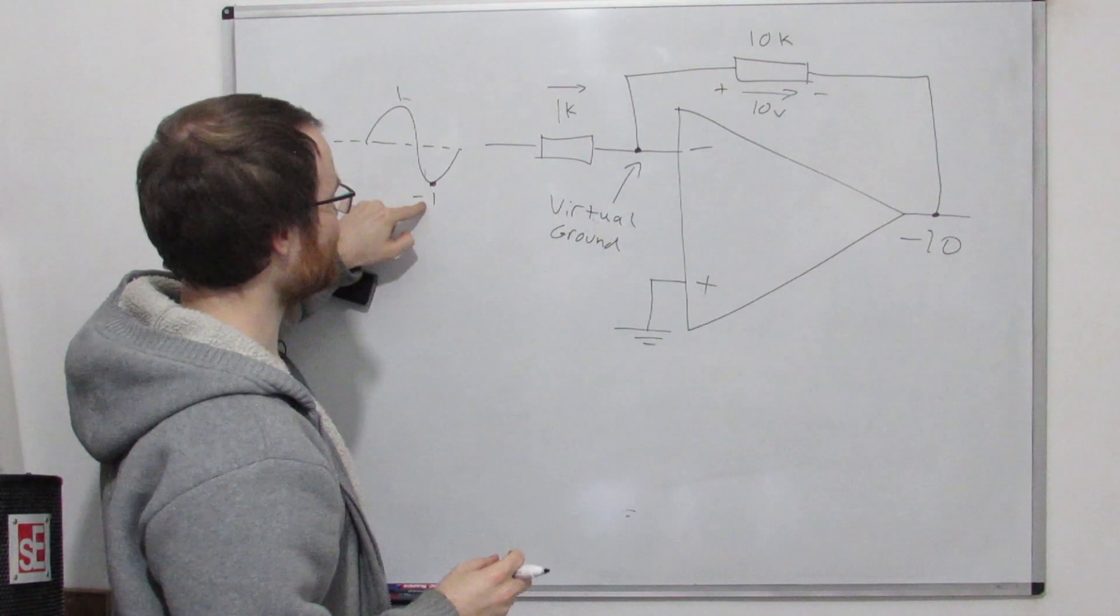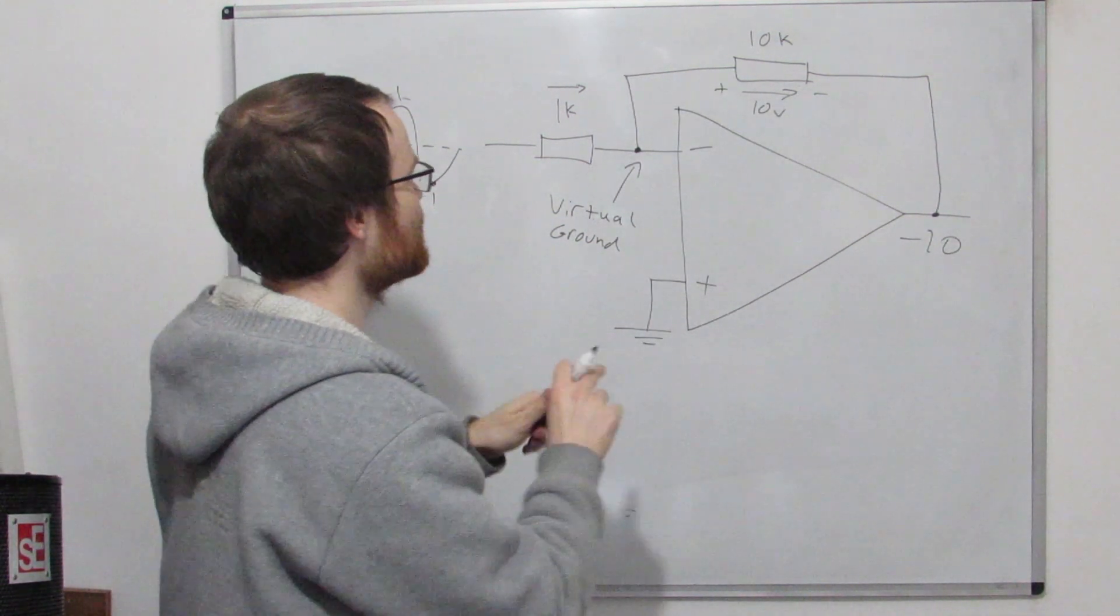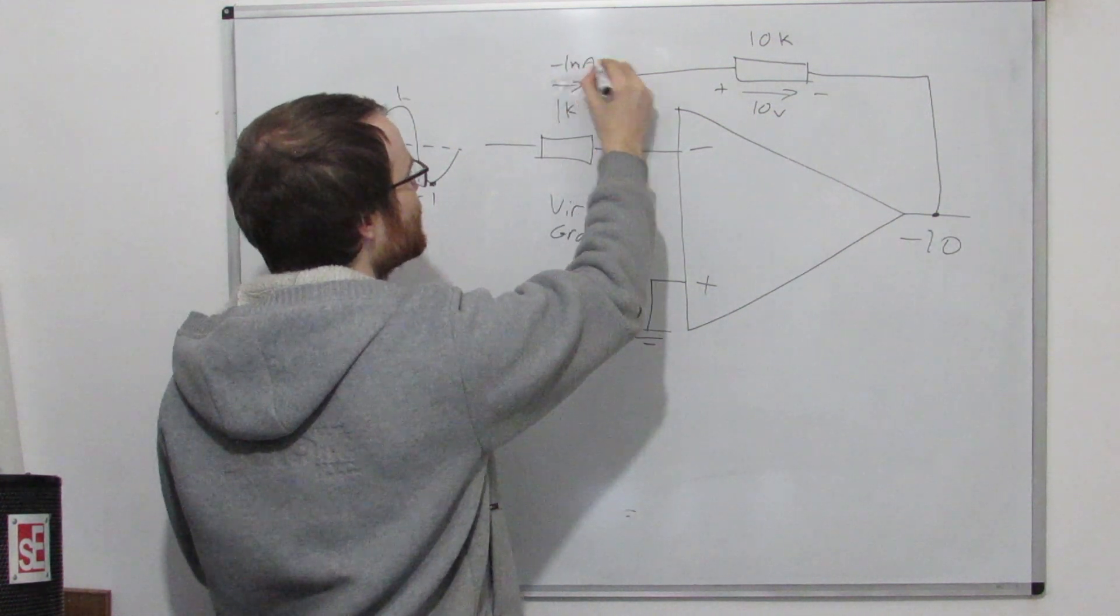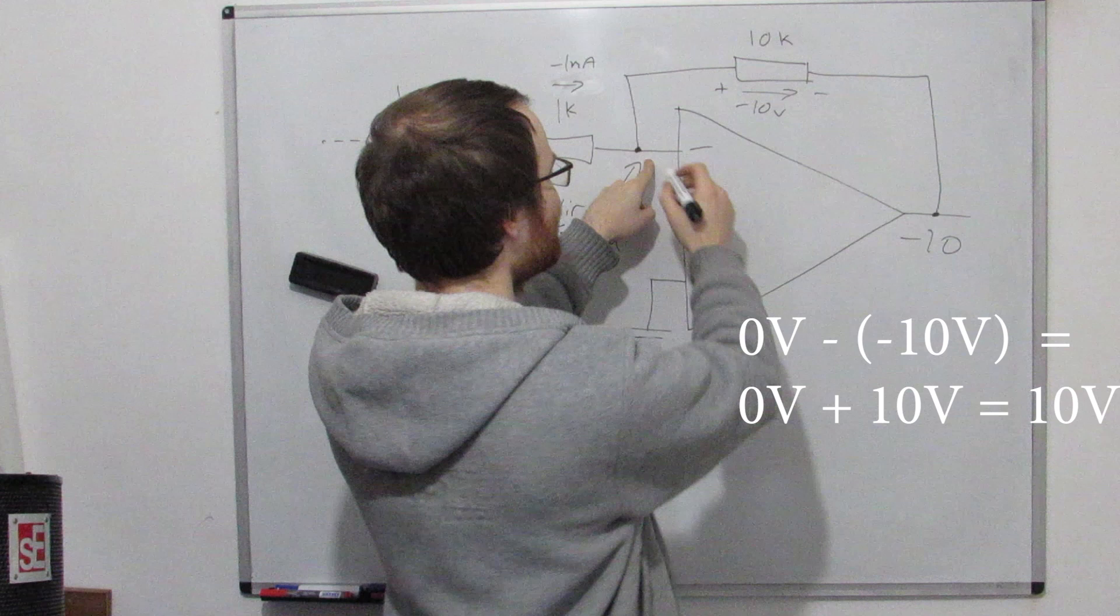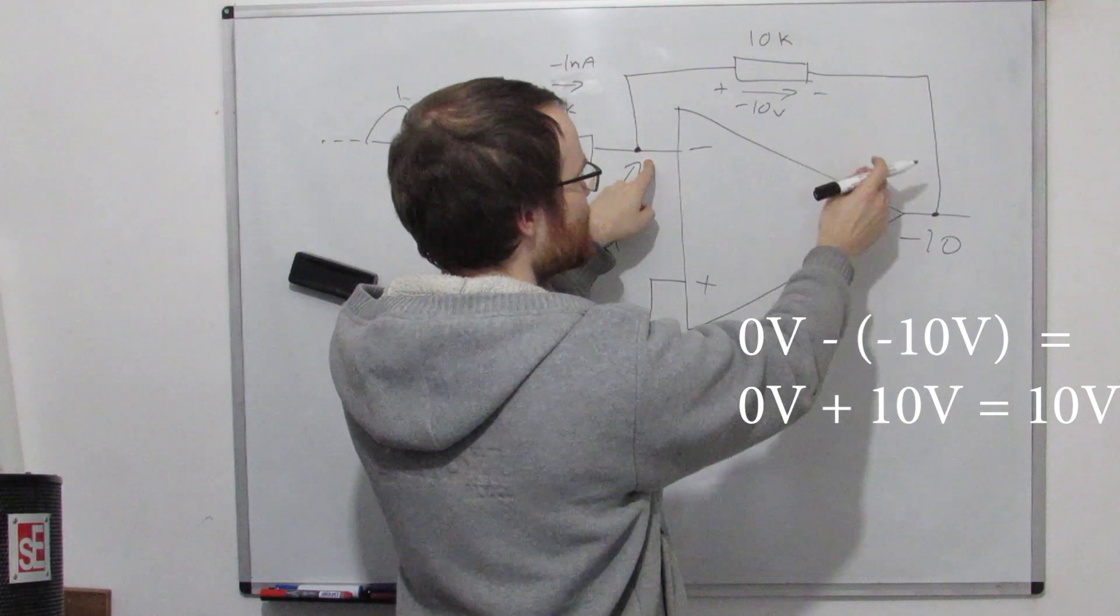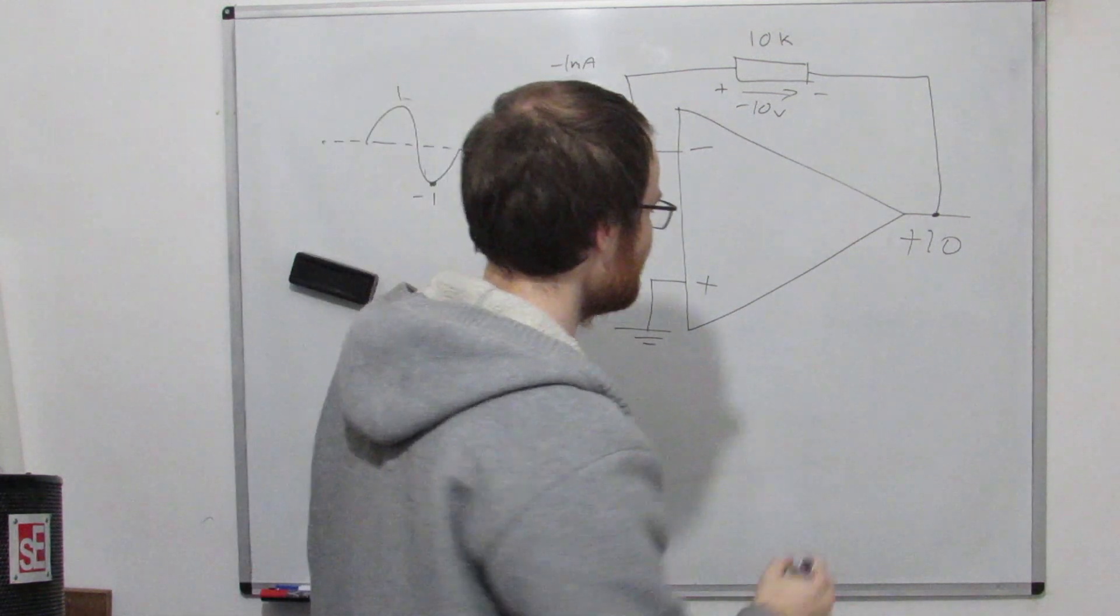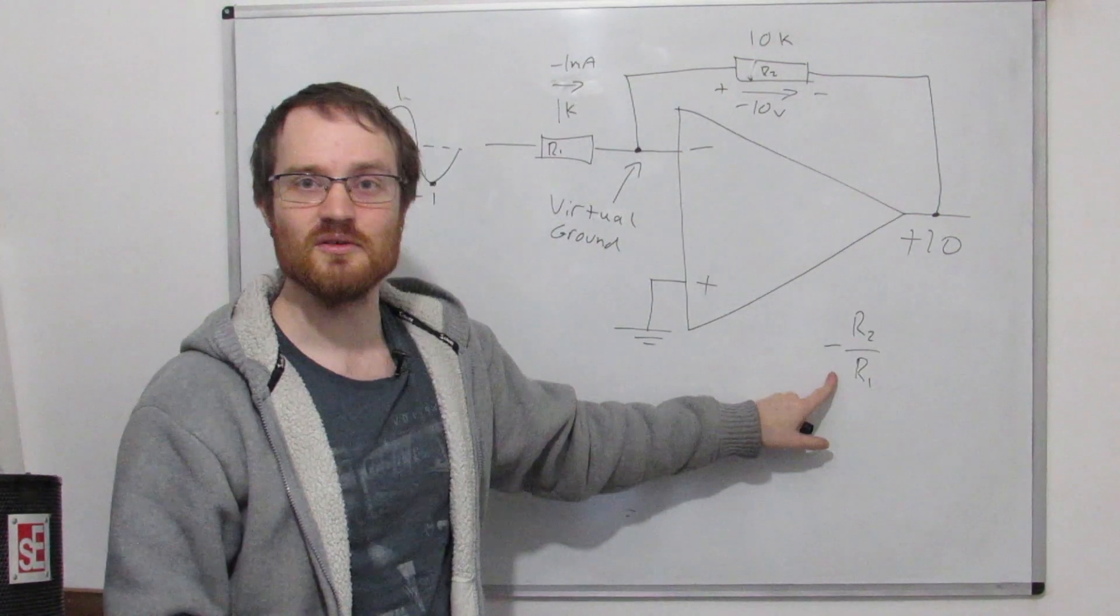so this must be minus 10 volts. And then when this is negative, this is minus 1 volt, well this all gets flipped around. This is minus 1 milliamp now. So now remember this is ground, we've got minus 10 volts, so this place must be plus 10.